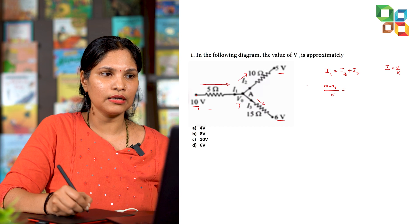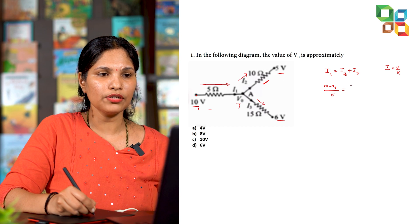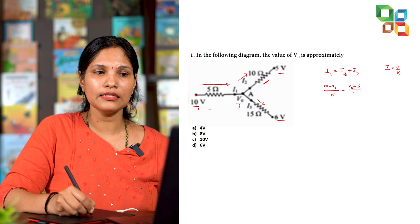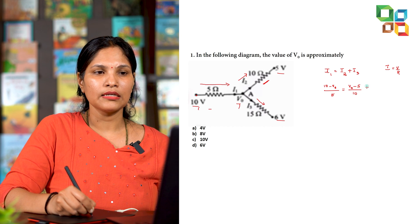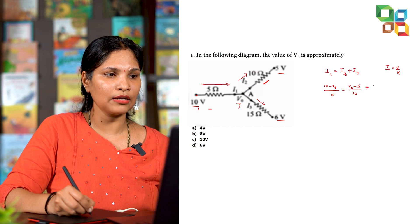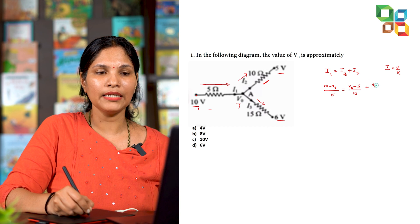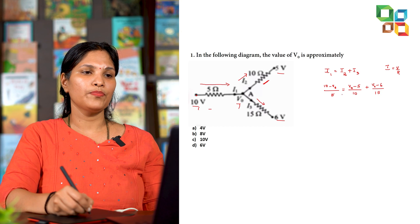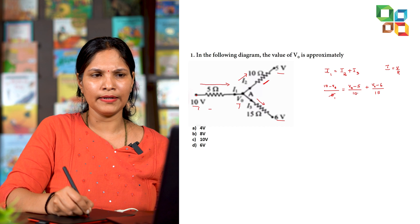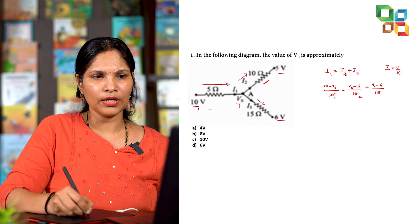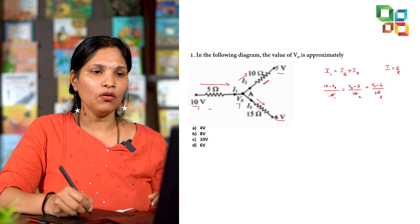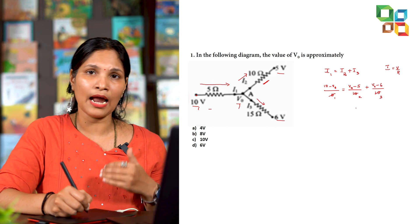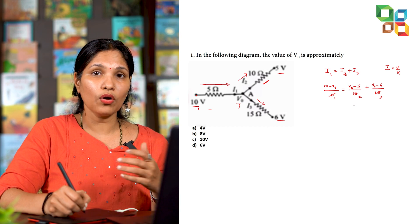I2 is the current in the second branch, so the potential difference is (V-naught - 5) divided by 10 ohms. I3 has potential difference (V-naught - 6) divided by 15 ohms. You can simplify this equation, but solving it for V-naught involves many steps and will take more than 60 seconds. So we look for another approach.